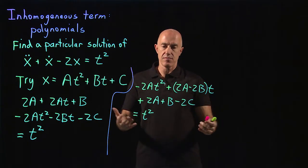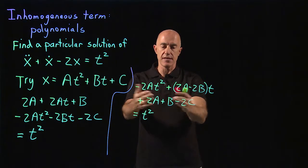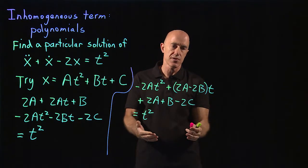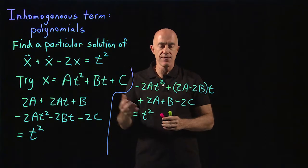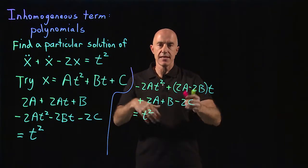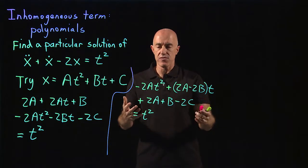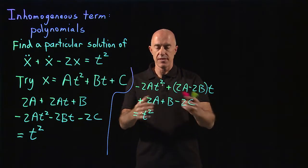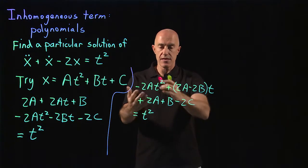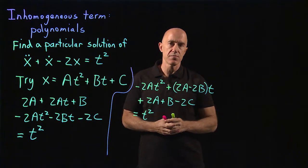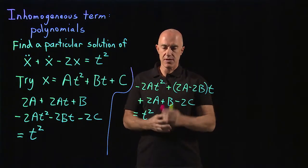To see that, you put t equals zero, so you get the constant term equals the constant term. Then you can take the first derivative with respect to t and set t equal to zero again. Or you can take the second derivative with respect to t. And then you can see that the coefficients have to be equal.